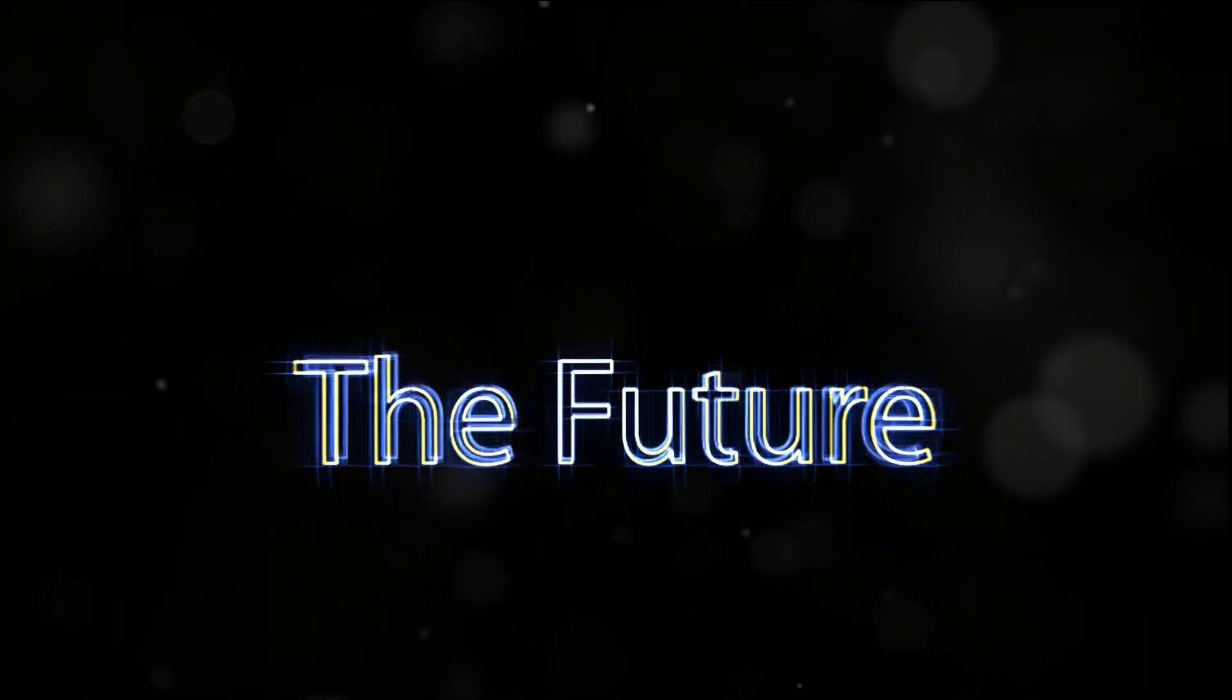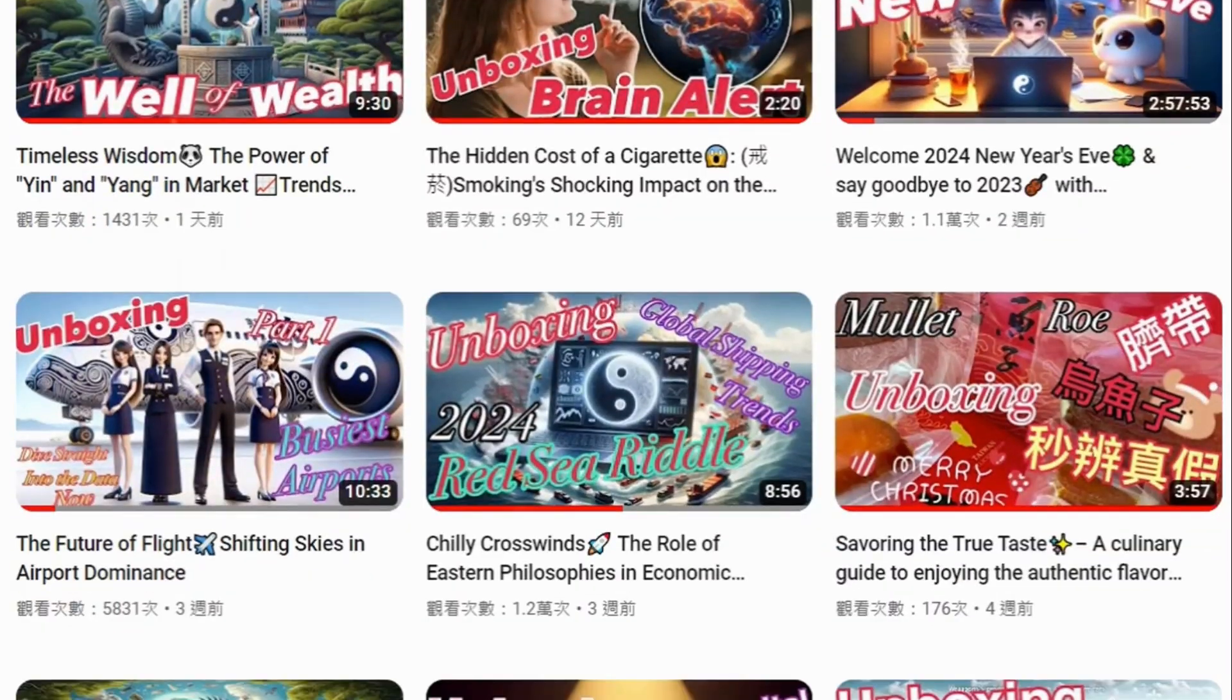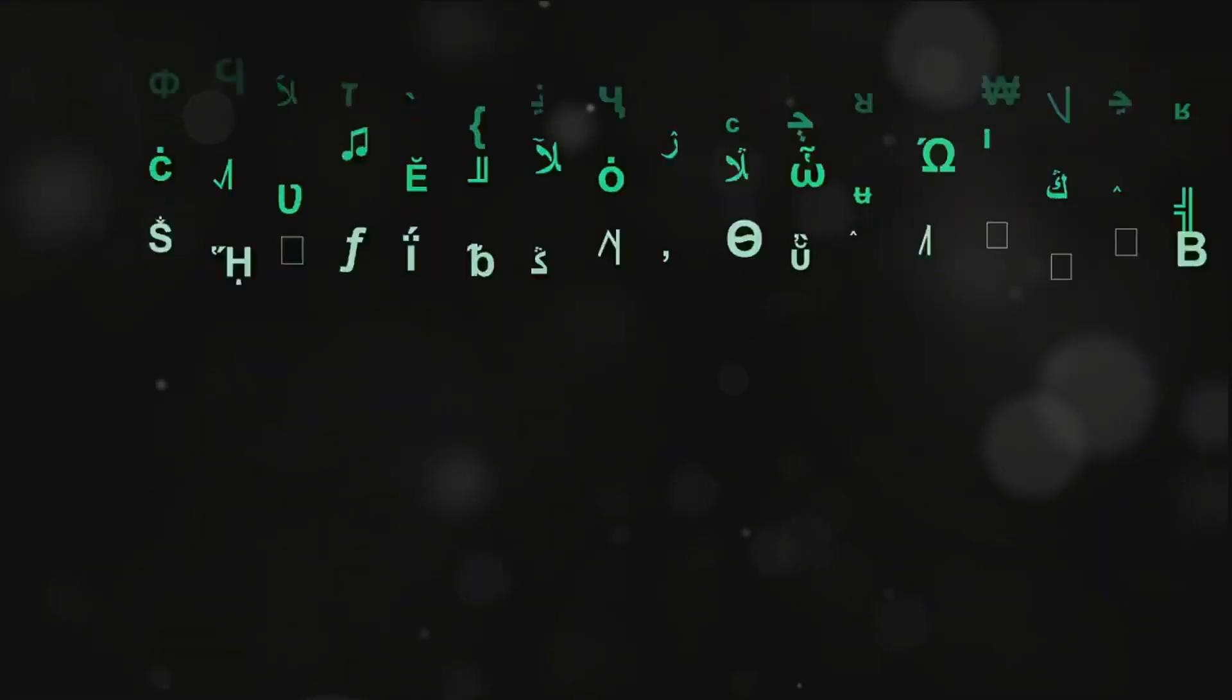The Yijing, or Book of Changes, is an ancient Chinese text from over 3,000 years ago. It's a complex system of binary arithmetic, represented as a series of hexagrams.